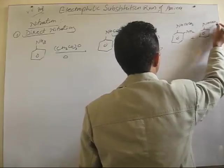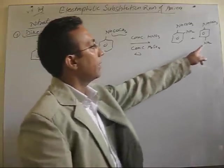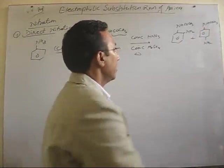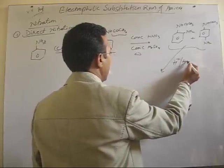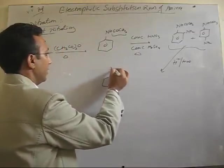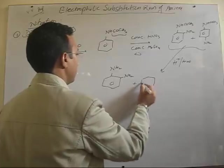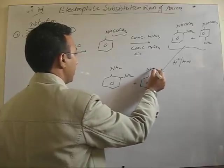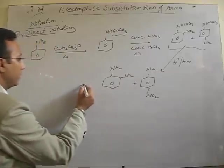So, this gives us the normal expected ortho and para products like this. But, firstly, we get ortho nitro acetanilide, which can be converted into aniline by hydrolysis in acidic medium. So, we get NH2 and NO2 plus para nitro, right?